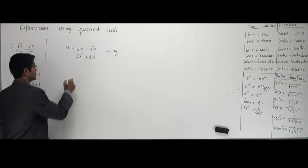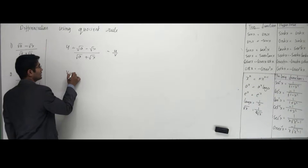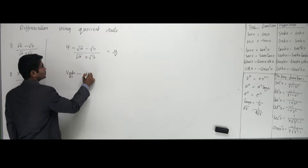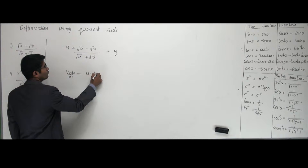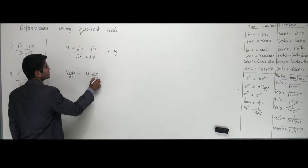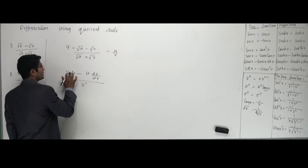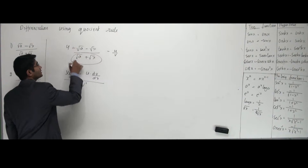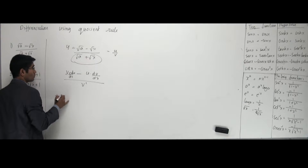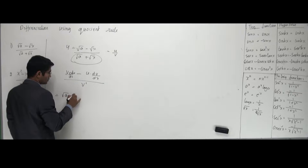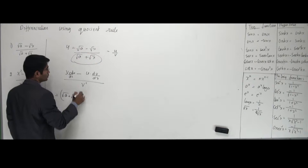What's the formula you have? That is V into D by DX of U, minus U into D by DX of V, all divided by V squared. So I go with root of A plus root of X — that's V, the whole denominator — into the differentiation of U.